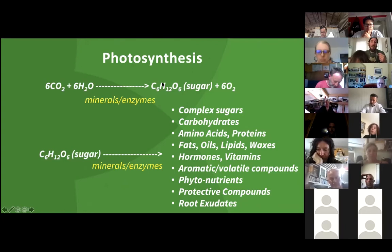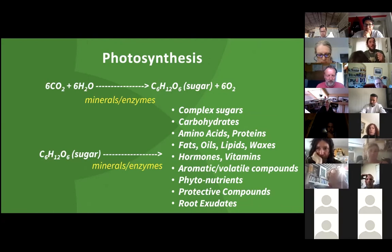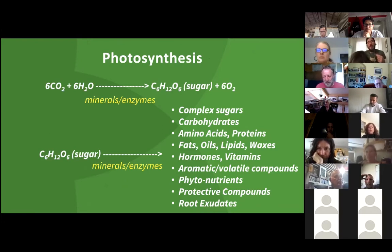When that glucose is produced and it's in the plant sap, that is indeed one of the things — just one of the things — that you're measuring with a refractometer. So when we use the word 'sugars,' we're measuring the plant sugars. That is a very generic and simplified idea of what we're measuring. Sugars are part of it, but they're only a small part of it. That is indeed the first step in the photosynthesis process.